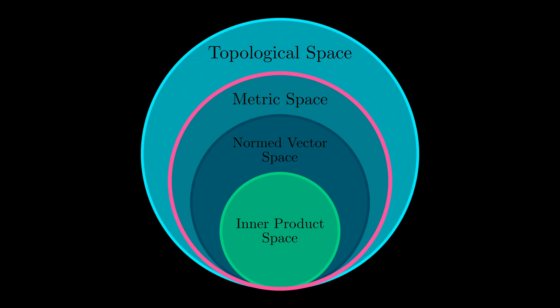As you work your way down this hierarchy, each smaller space is just a special case of the larger space. So every metric space is a topological space, every normed vector space a metric space, and every inner product space a normed vector space.